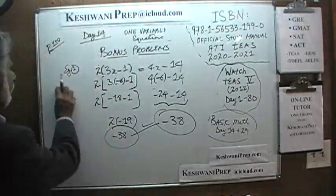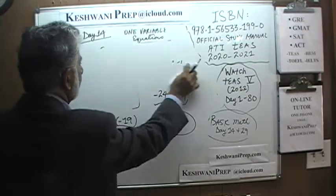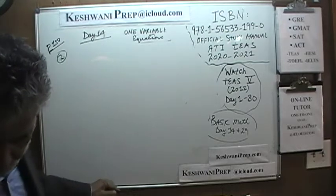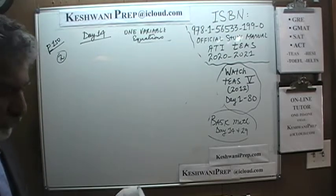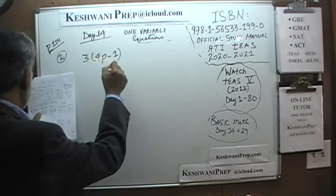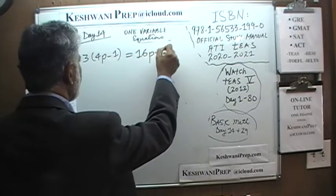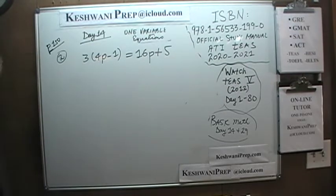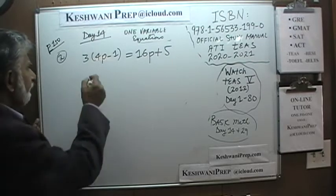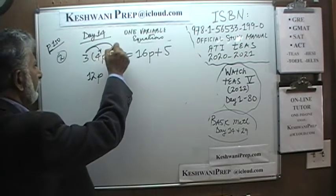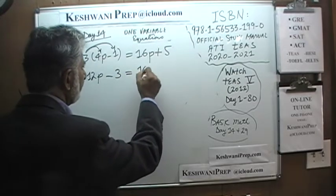Let's do one more. Again, as soon as I put it on the blackboard, pause the video and do it yourself. Problem 2: 3 times 4p minus 1 is equal to 16p plus 5. Opening the parenthesis: 3 times 4p is 12p, and 3 times negative 1 is negative 3, giving us 12p minus 3 equals 16p plus 5.